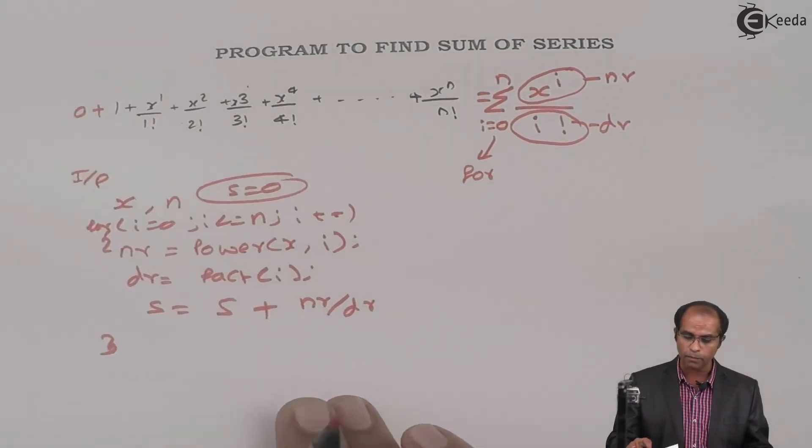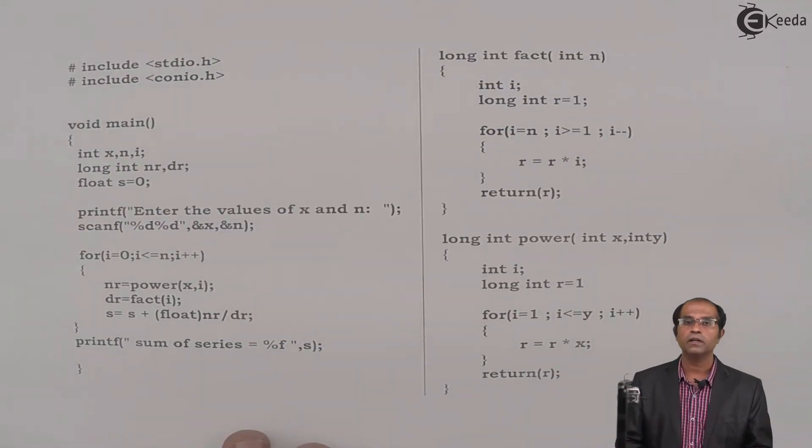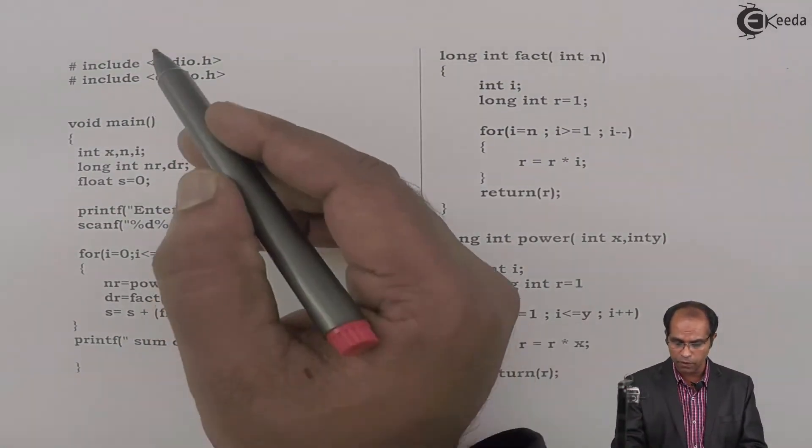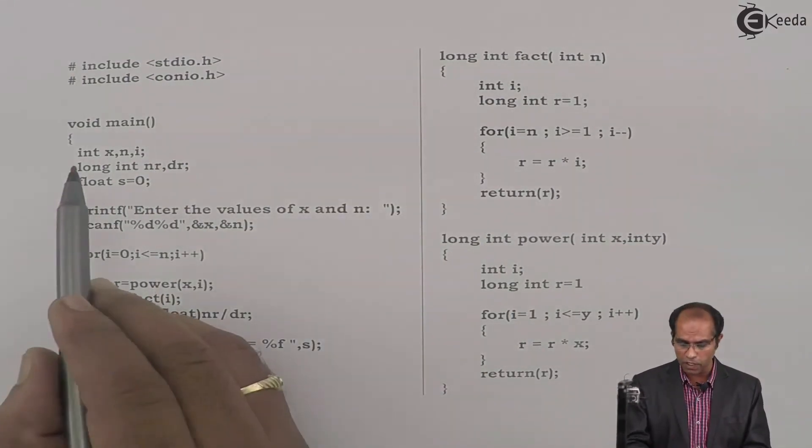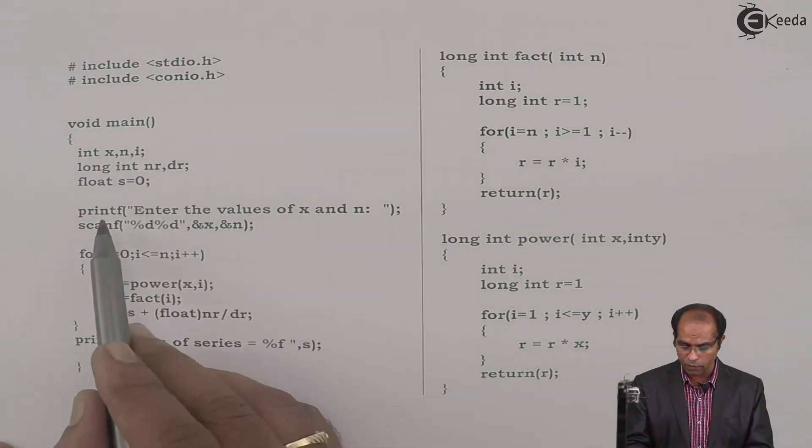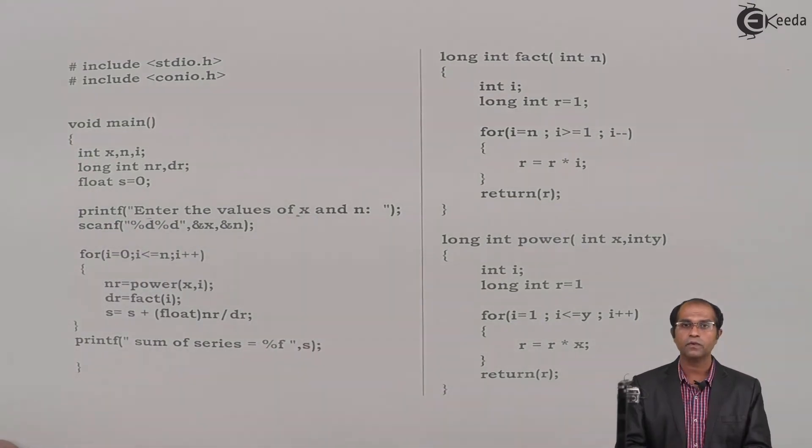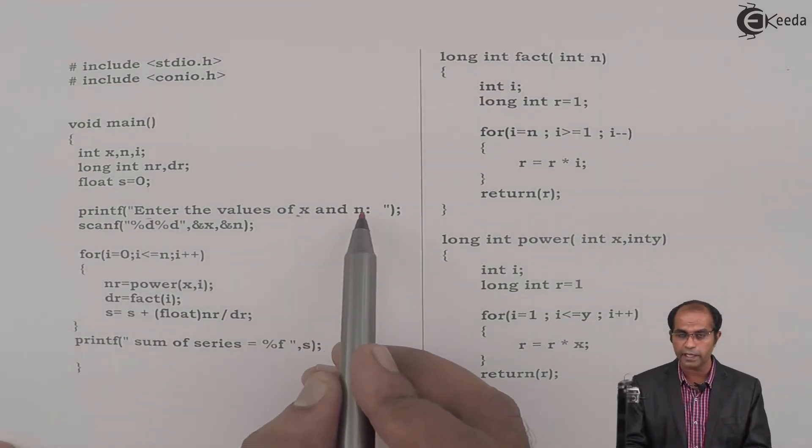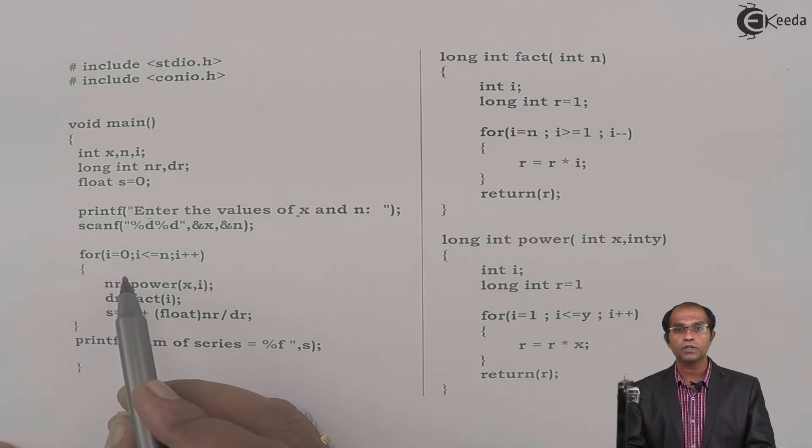Here I have these two functions. I have used the header for declaration, then the main function. The inputs required are x and n. The term i indicates a variable for this particular for loop. So enter the values of x and n, where x indicates the base and n indicates the number of terms. Read that value x and n.